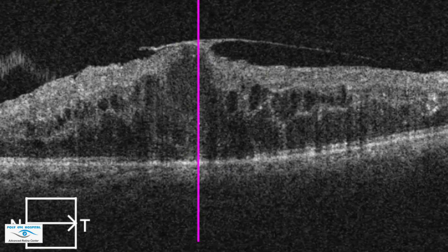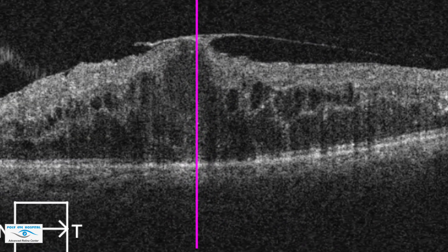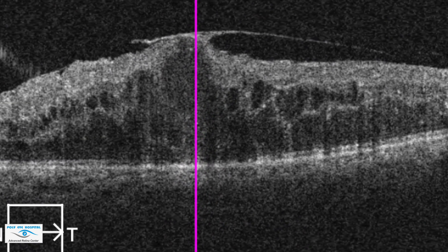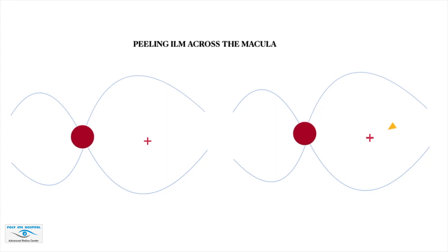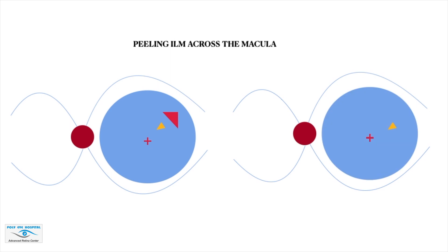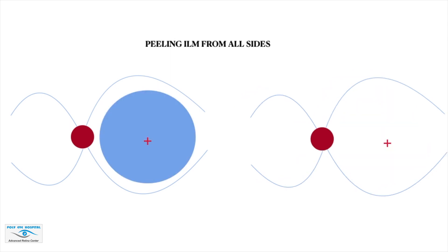OCT of the macula shows edematous retina with a large subfoveal cyst. The roof of the cyst is very thin; any sort of traction will cause its deroofing, leading to a lamellar hole. So if we pull the ILM across the macula, it will cause traction and dragging. Instead, we should peel ILM all around the fovea first and then gently pull the ILM over the fovea in the end.